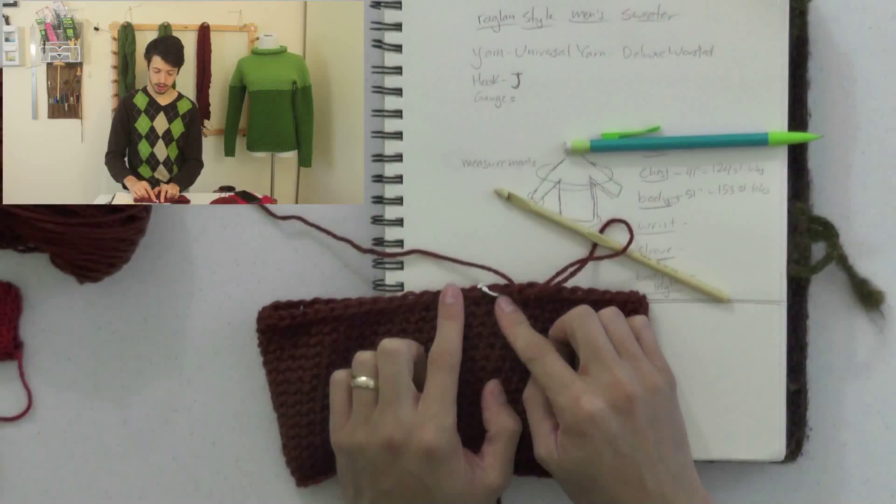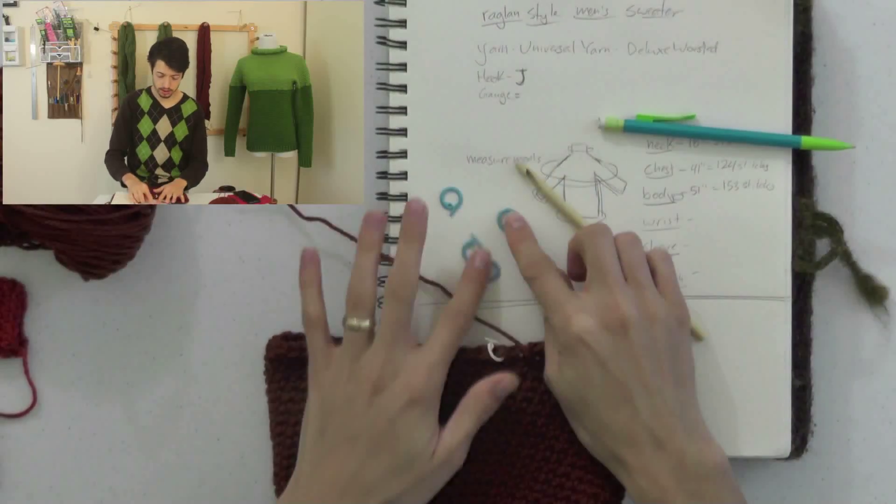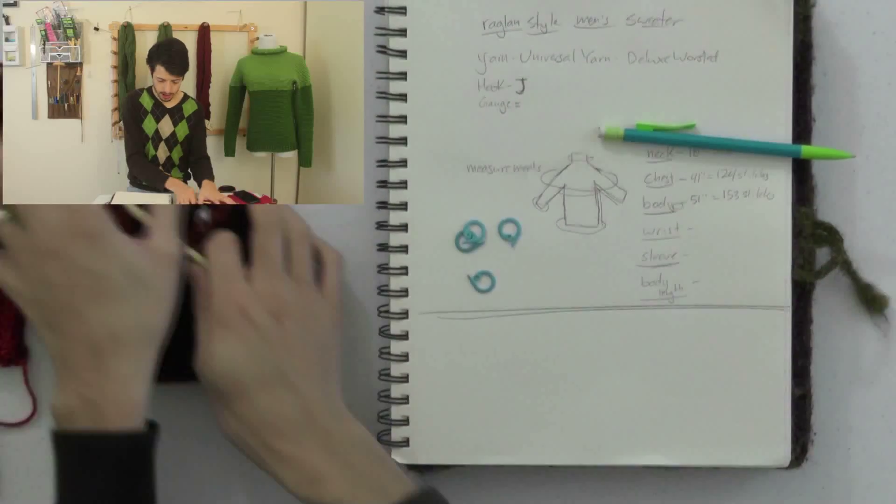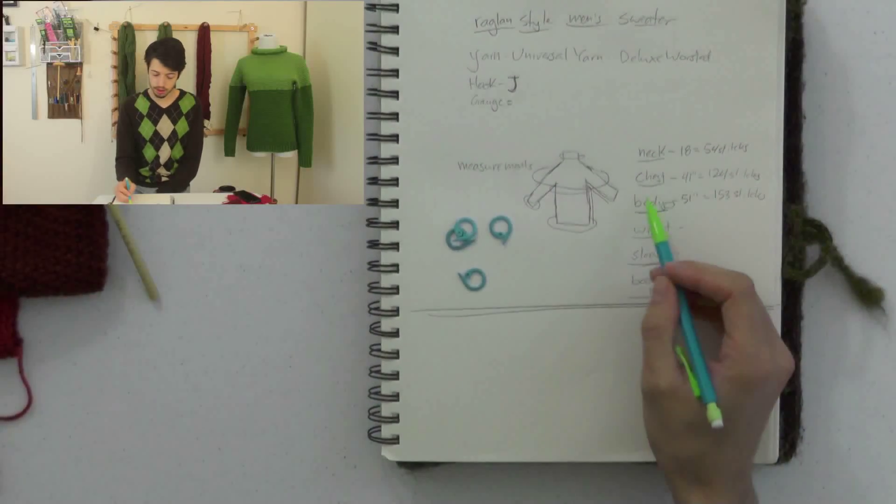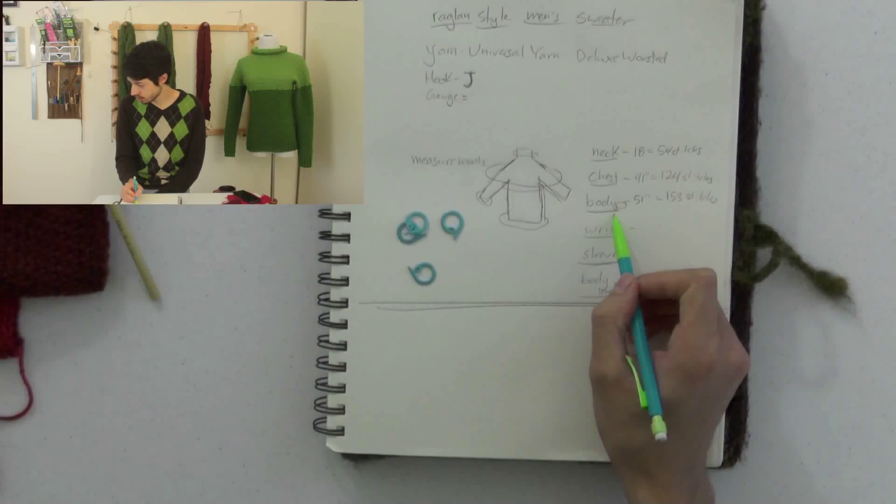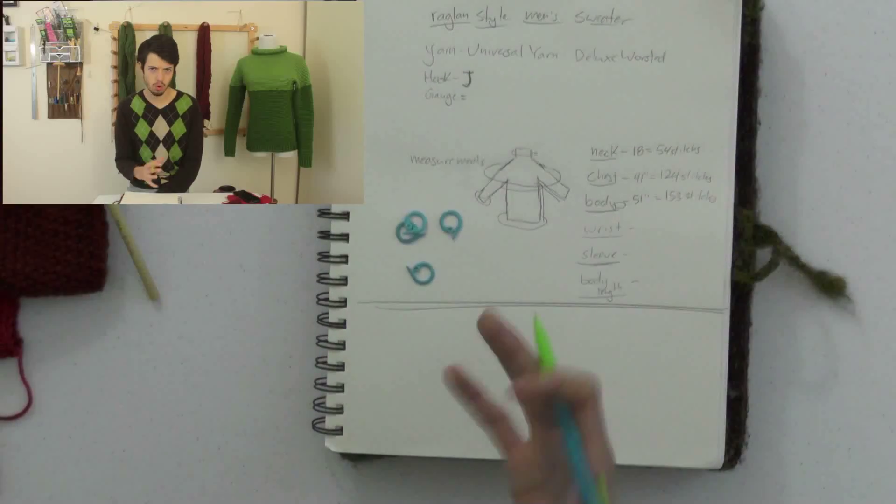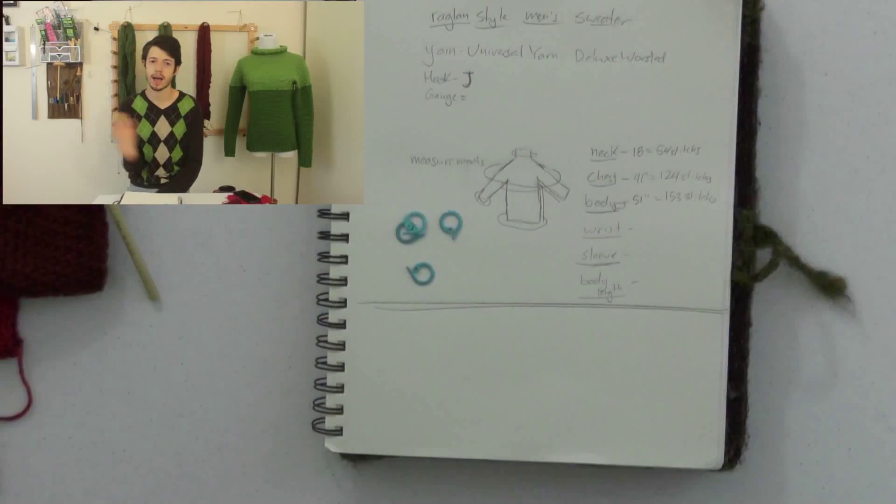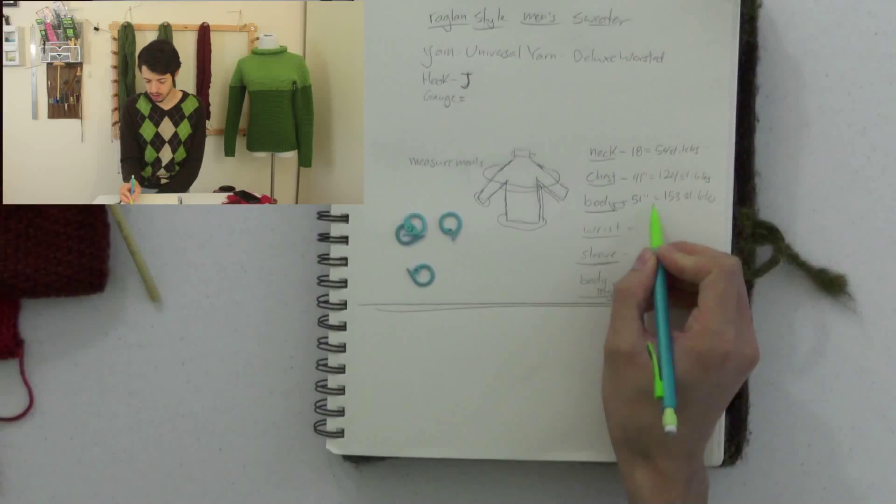So I switched out my stitch marker in the back for a white one. Because, we're going to be placing our raglan increases now. So, I have four other stitch markers in a different color. That way, I can make sure that I place them in the right places. So, to make sure that I do this right, I need to do a little bit more math. We found out that with the three inch ease measurement, that my chest is 41 inches, which is 124 stitches in our gauge. And then, for my body, I measured my total body girth measurement as 46 inches. However, I wanted to add a little bit more ease into that because it felt like the arm holes would be a little too small. So, I added a total of 10 inches. That's 5 inches on each side. Now we have 51 inches, which is 153 stitches.